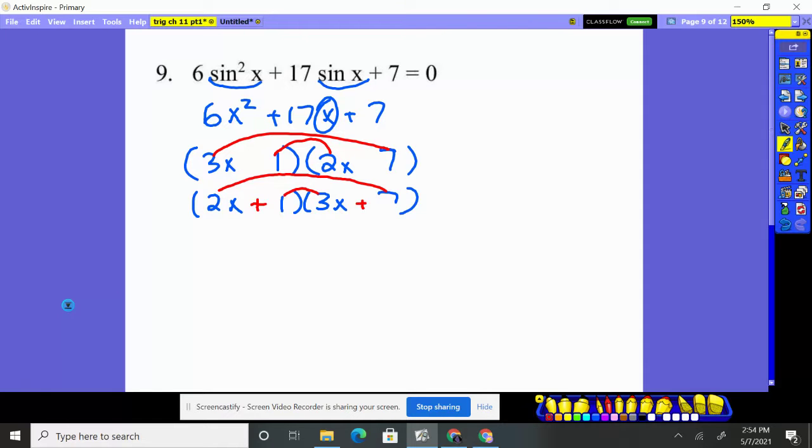So, I know. And again, because that's 3x and 14x, which gives you the 17x. So, I'm now going to rewrite this where I replace this x back with sine of x. So, 2 instead of x, I'm going to say times sine of x plus 1 times 3 times sine of x plus 7 equals 0.